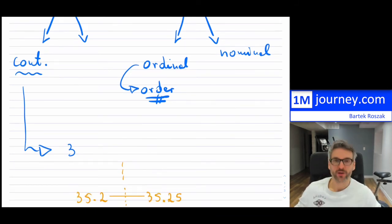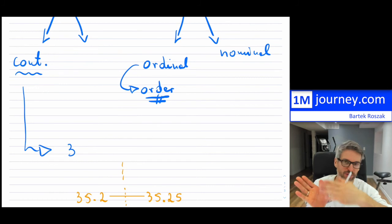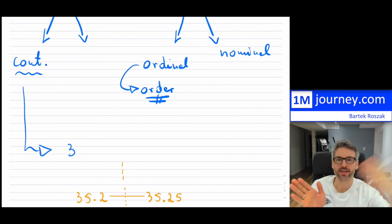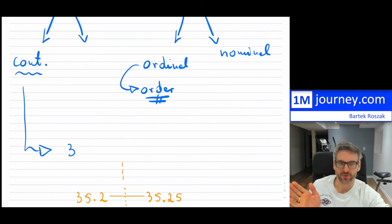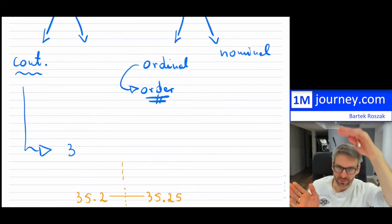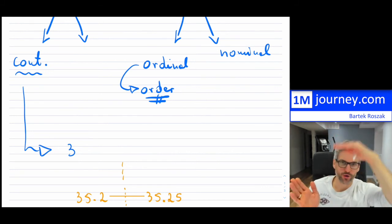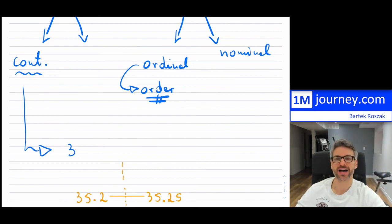For example, pain levels have an order — between one and ten, or categories like not very severe, severe, very severe, extremely severe. Those are ordered levels. There is an order associated with the actual measurement, so that is ordinal.